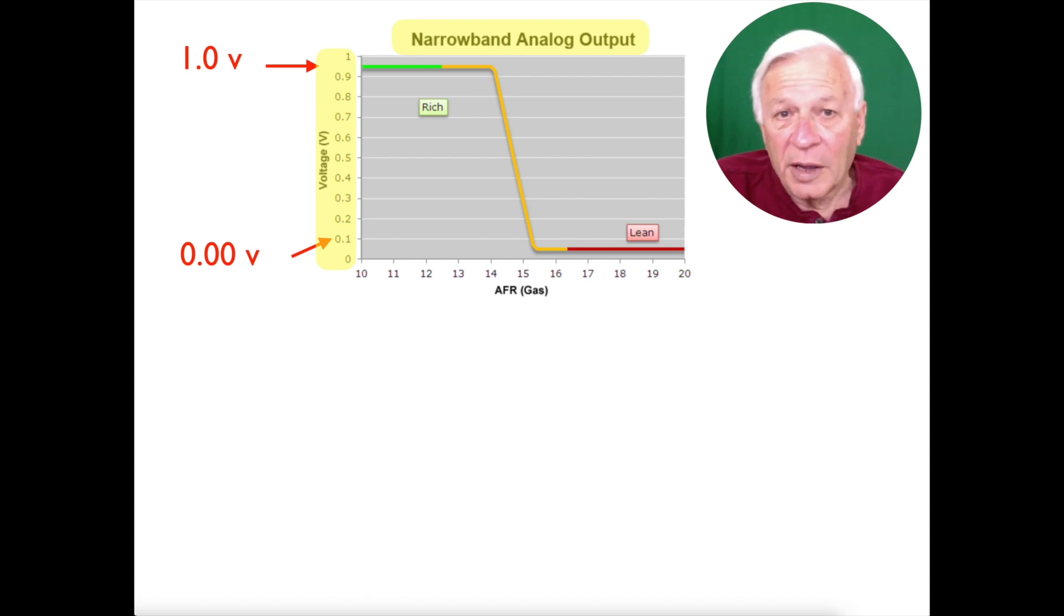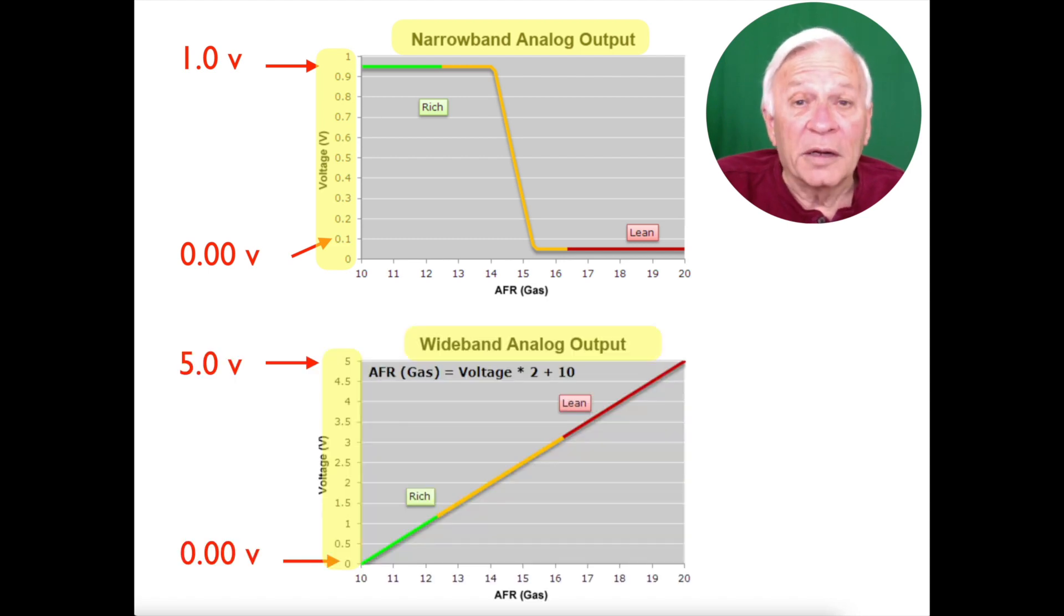A wideband can measure between 0 and 5 volts, a much wider band or measurement scale. The higher the voltage, the leaner the mixture, so it doesn't report just that it's lean or high—it can report how high or how lean. And the lower voltage is a richer mixture.